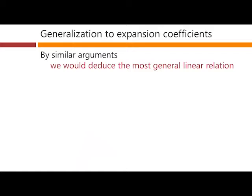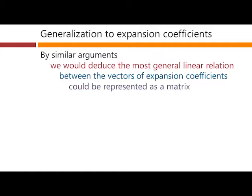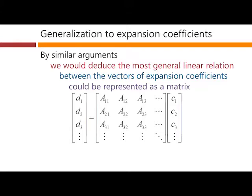So therefore, by these similar arguments, we would similarly deduce that the most general linear relation between the vectors of expansion coefficients could be represented as a matrix. And that matrix in general would look like this. So what we're saying is that the most general possible linear relation here, whereby, for example, this element d1, the expansion coefficient d1 for our function g,